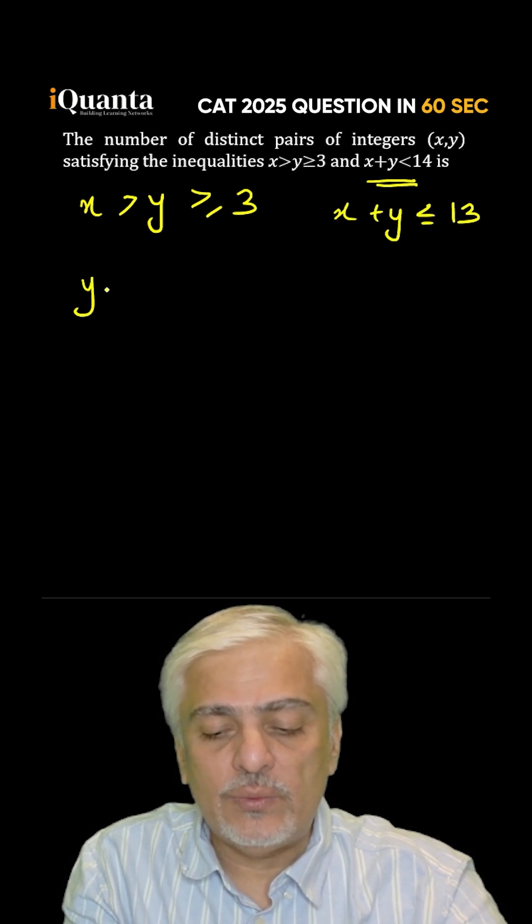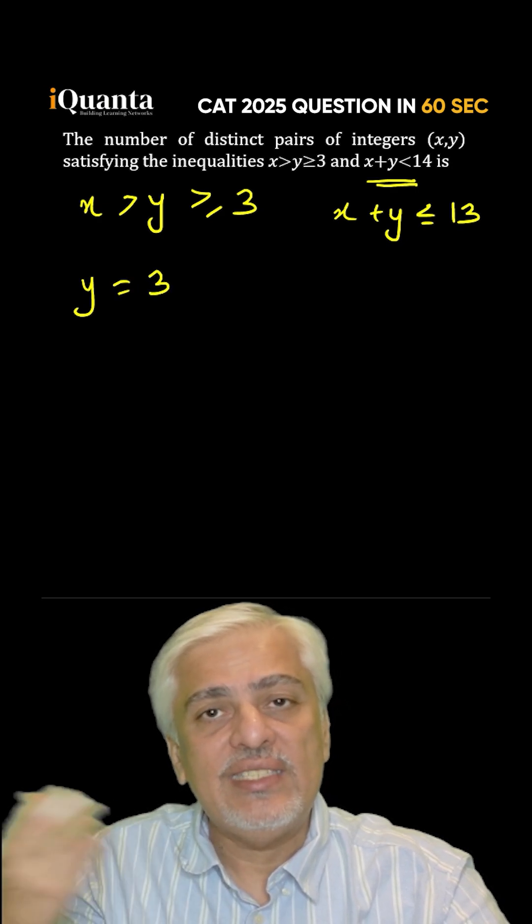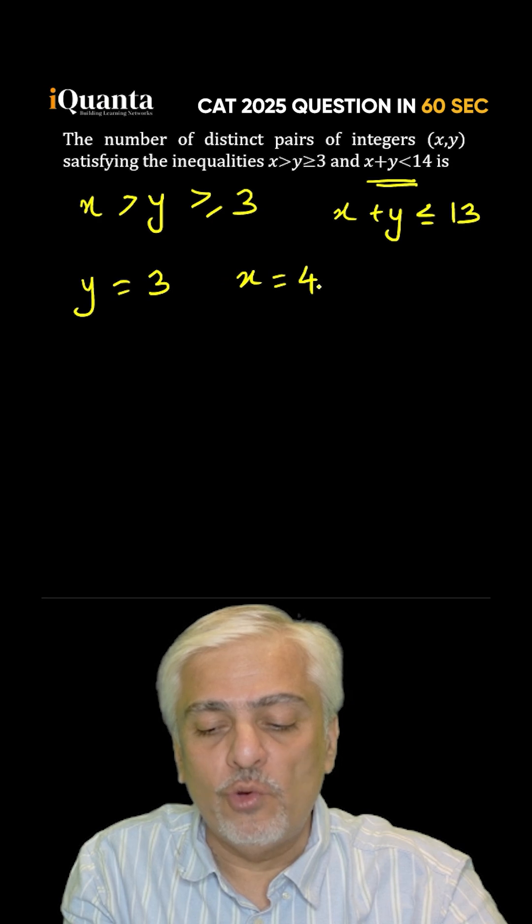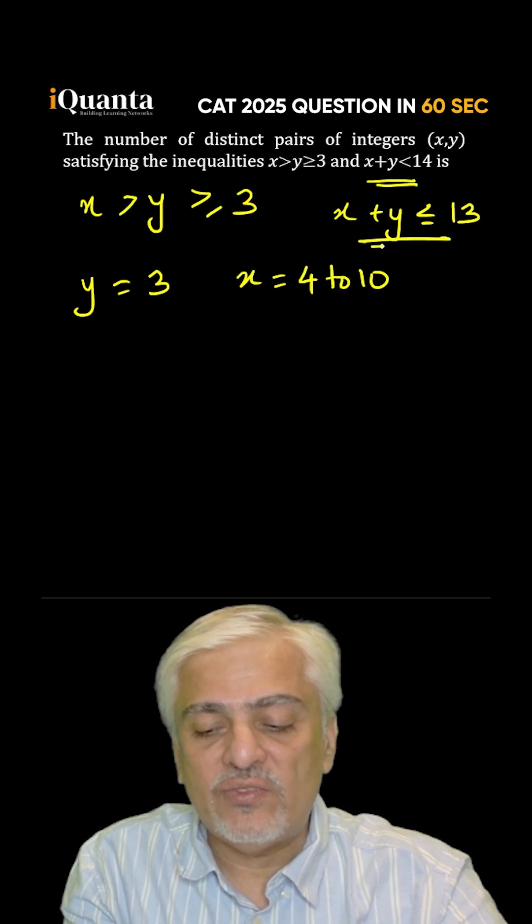Now y can only start with 3. Now if y is 3, x has to be more than 3. That means x can take values from 4 to 10 satisfying this equation also, which are 7 values.